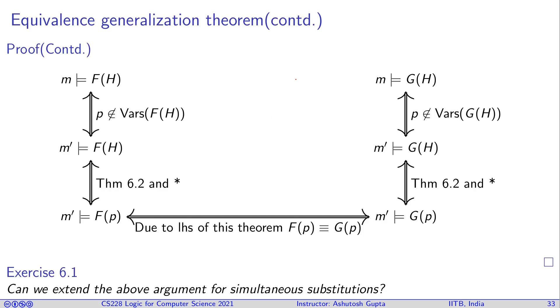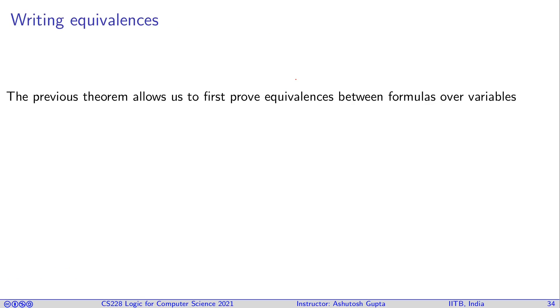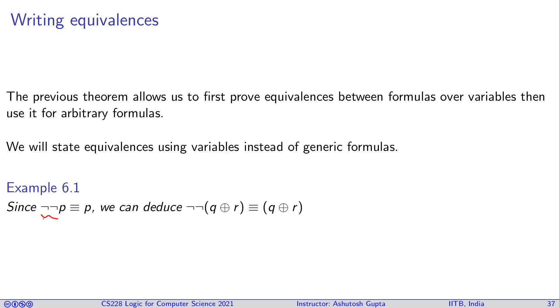What is the value of such a theorem? The previous theorem allows us to first prove equivalences between formulas over variables and then use them anywhere. Here's an example: we've shown that ¬(¬p) is equivalent to p. What we can do is take p out and replace it with any formula, and this equivalence still holds true. This theorem allows us to do that. As soon as we define the semantics, you must have already been believing this is true, but now we have formally proven it.